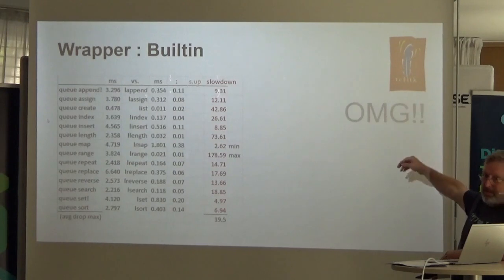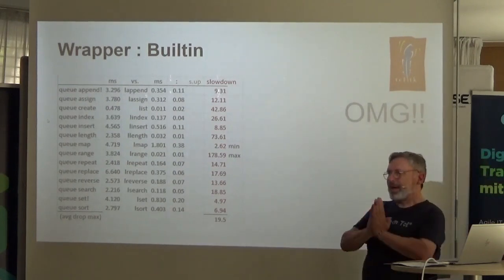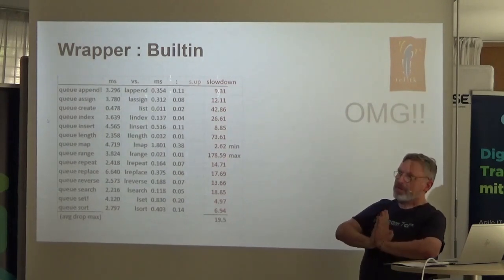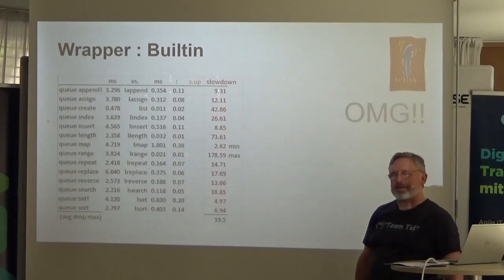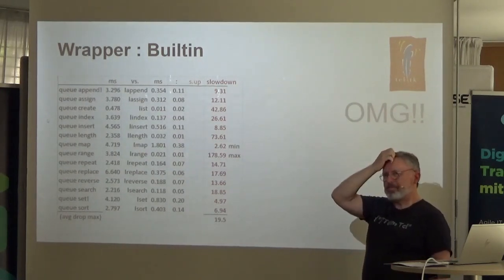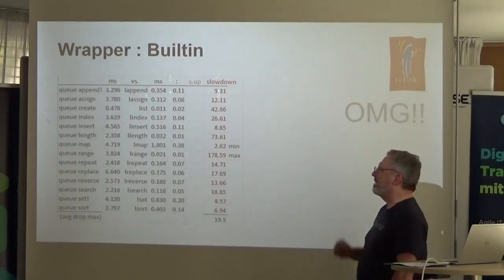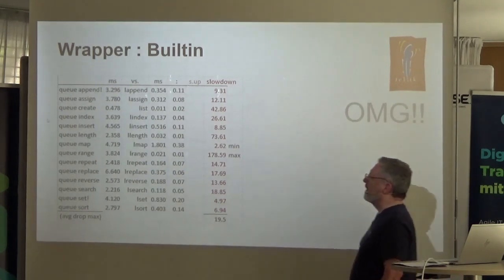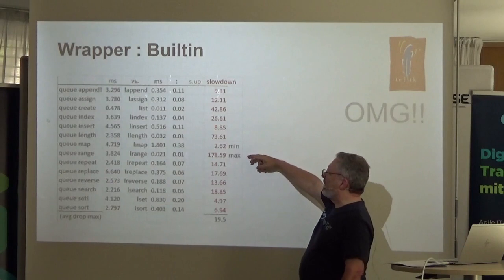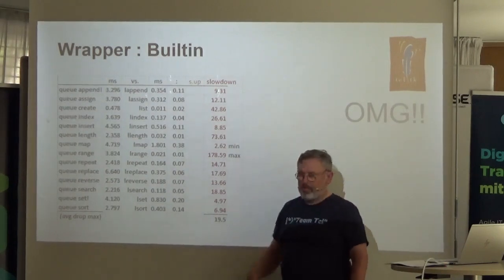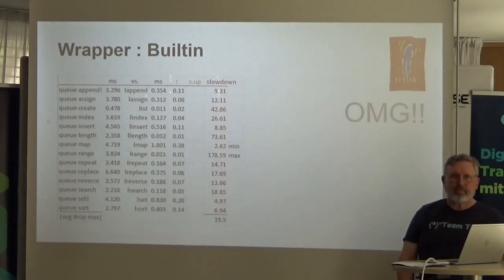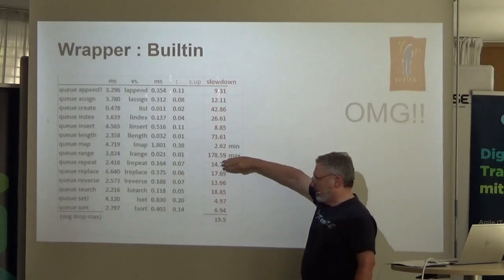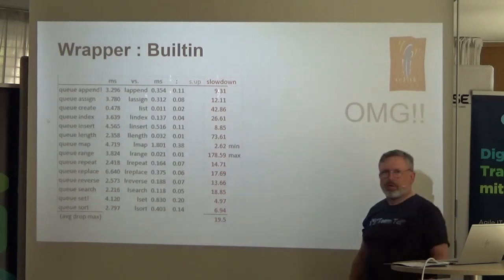Here's the horror story: I timed them. The timings weren't completely repeatable, but I'm looking forward to 8.7 when we've got 'time rate'. It's kind of horrifying to see that the Q range operator — which is just a wrapper around the built-in — ended up being 180 times slower. On average, dropping the max, it's still 20 times slower to use a wrapper.